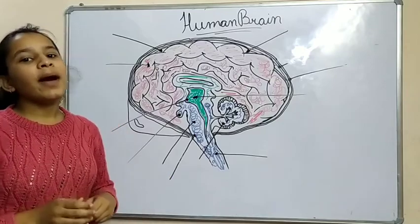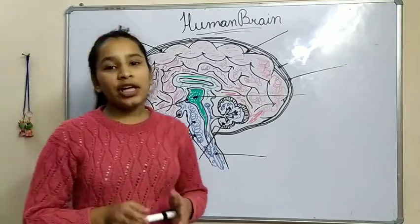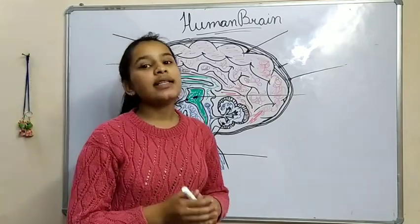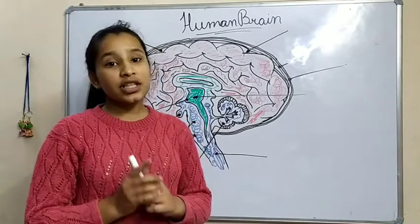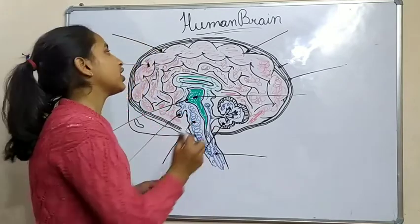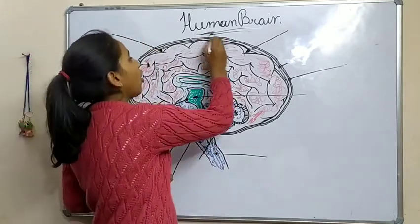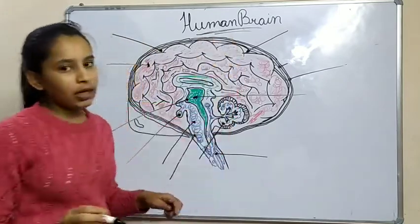Hello friends, I am Umika Pandey and today I will tell you class 10 biology chapter number 7, control and coordination, the topic human brain.